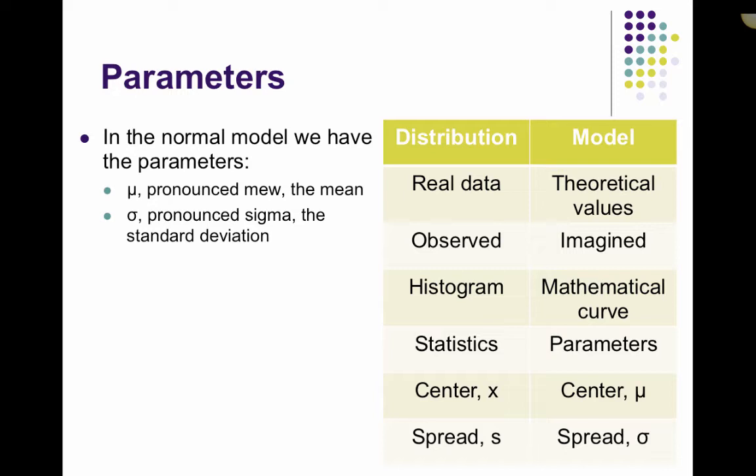If we're using the model, we're using theoretical values, which are imagined, and we're using the mathematical curve to show the normal model. We're using parameters, where our center is the mean, but it's mu. And our spread is our standard deviation, but it's sigma. Now, mu and sigma are going to come up again, so it is important that we know that mu is the mean, and sigma is the standard deviation.